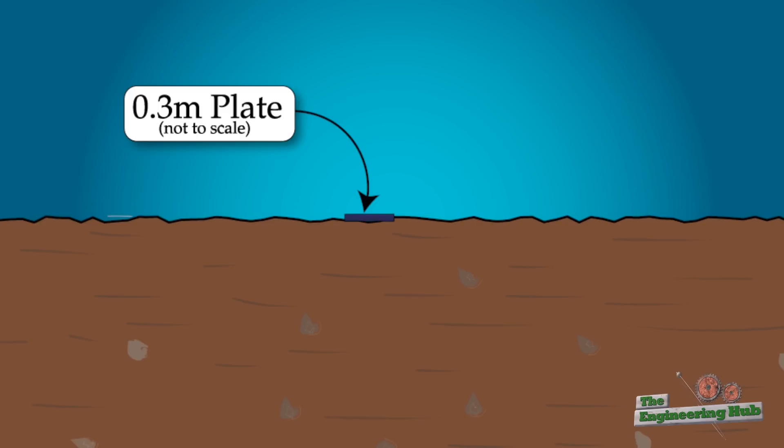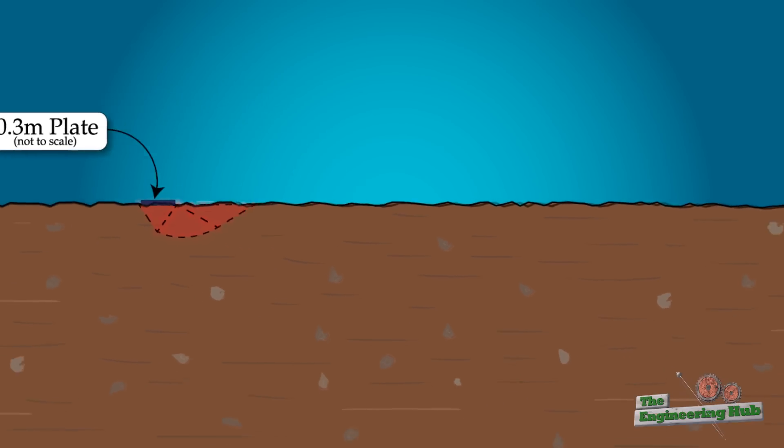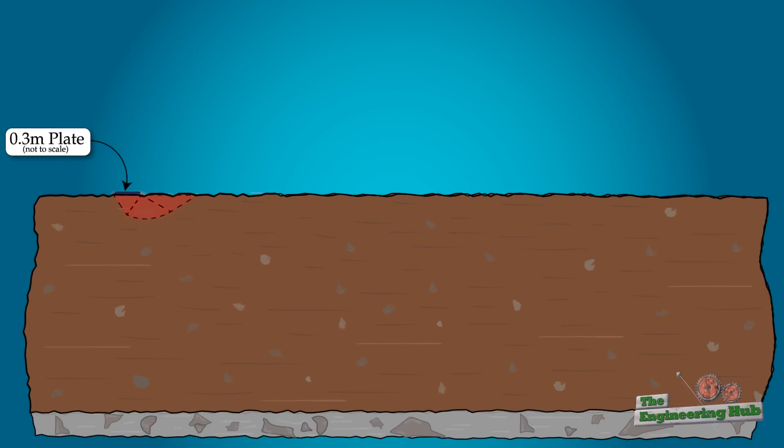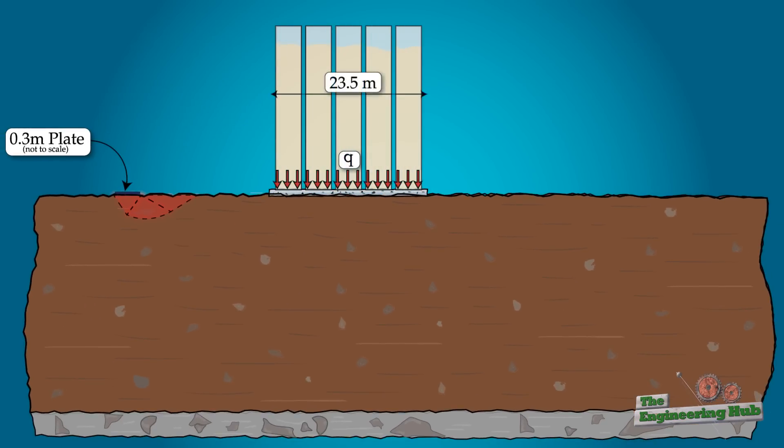Based on the Terzaghi failure model, this meant that they were only testing the soils near the surface of the plate. The actual foundation was 23 and a half meters long, which meant the failure line would go much much deeper.